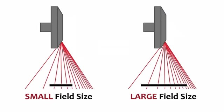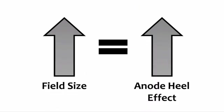The x-ray field size is one more factor that affects the severity of the anode heel effect. Increasing the field size increases the anode heel effect. Using a large field exposes the receptor to more of the low intensity beam on the anode side and more of the high intensity beam on the cathode side, resulting in an increased difference in intensity across the x-ray field. The relationship between field size and the heel effect is direct — as the field size increases, the anode heel effect also increases.